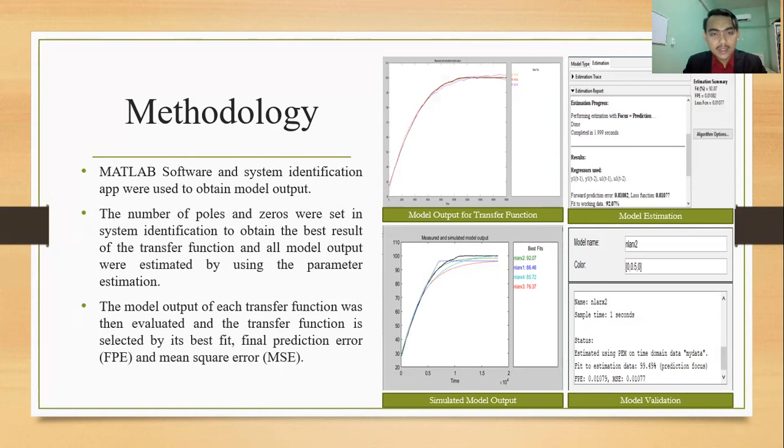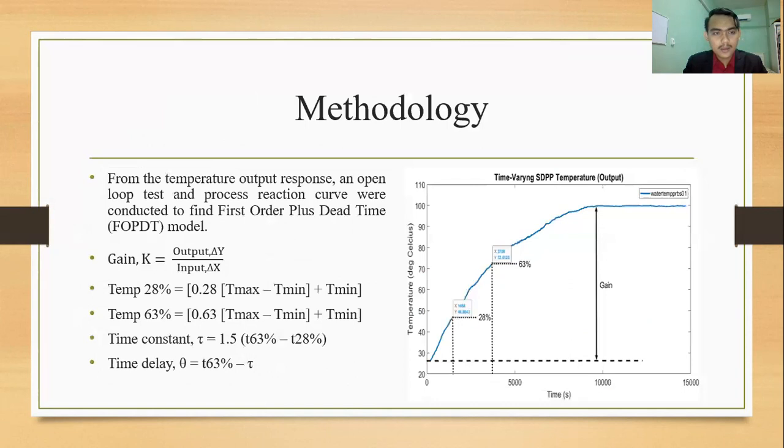So as you can see on the right side, this is the example of system identification process. The first picture is about model output for transfer function, the second one is simulated model output, the third one model estimation, and the last one is model validation.